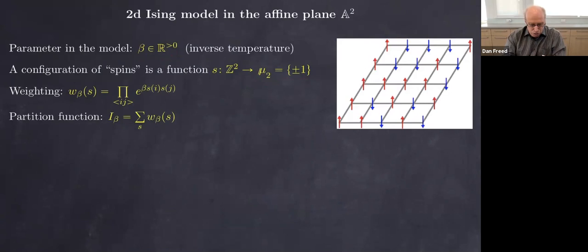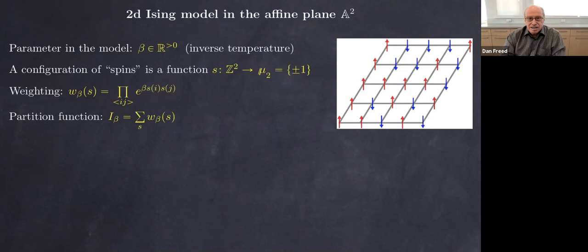We weight this configuration of spins by summing over all the edges of the lattice — we look at each edge and ask whether the spins are equal or opposite, giving plus one or minus one, and take the product over all edges. The partition function is the sum of that quantity over all possible configurations — functions from the vertices to this group.